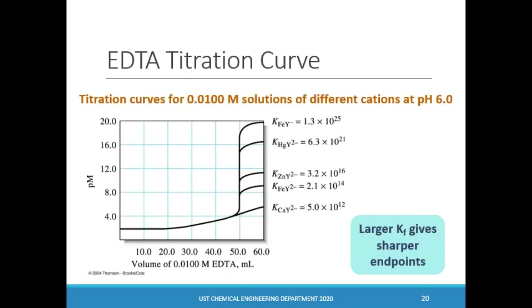In this graph, you will see the titration curves of different metals with EDTA at pH 6. At constant pH, it is best to look at the formation constant values of different metals to see which will form stable products at the specified pH. A useful table was shown in slide 12. Generally, larger K values form more stable complex products and thus give sharper endpoints.